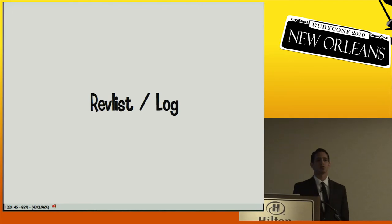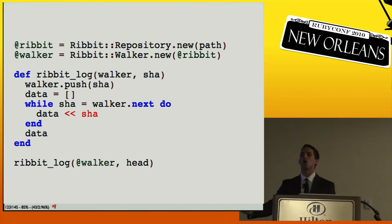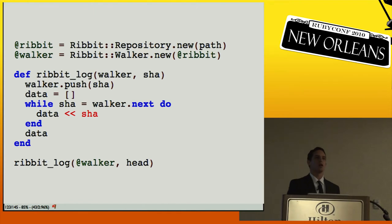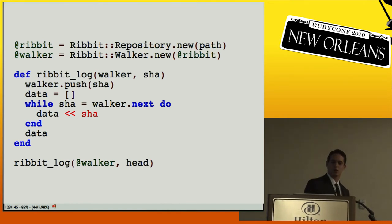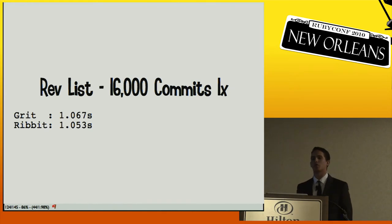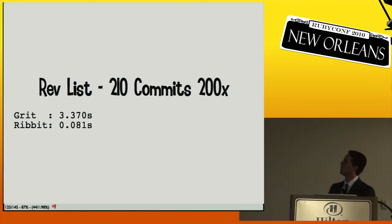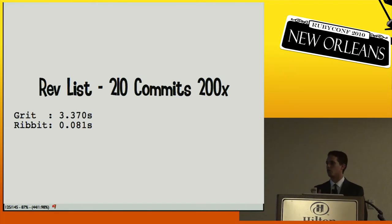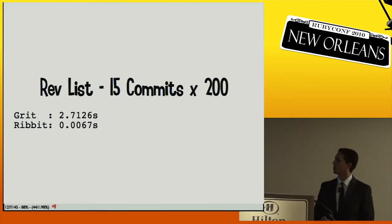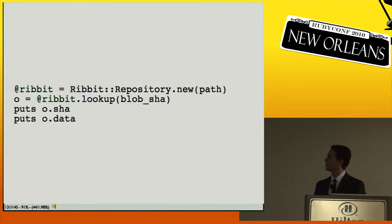Rugged doesn't have a simple `repo.log` — instead it gives you a revision walker where you specify heads to start at and it keeps giving you the next commit until the end. You give it different strategies. It's fast because it avoids fork/exec overhead. For a single call it's similar to Grit, but if you're walking many commits, it's way faster because it completely skips the fork/exec overhead each time.